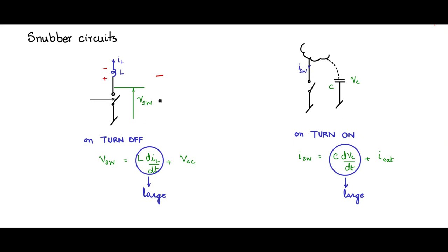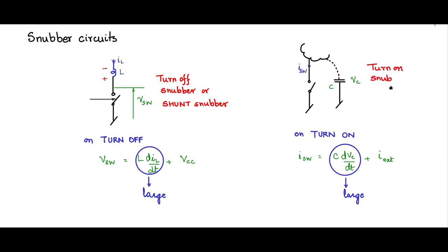During turn-off, the protection circuit — the snubber circuit — is called a turn-off snubber, or even a shunt snubber in many cases, because we try to put a capacitance across the device to address this L·di/dt problem. The dual of this is the turn-on snubber, where we put an inductance in series to address the problem of a large C·dVc/dt current; it is called the series snubber. So let us see how we design the basic turn-off snubber and the basic turn-on snubber.